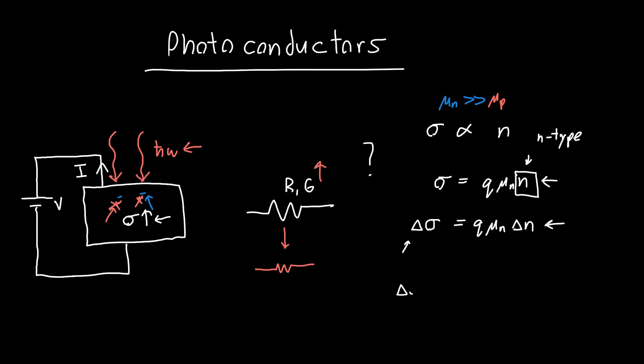For a given conductivity change delta sigma, what we're actually measuring is a change in the observed current flowing through this conductor. So our circuit electrically looks something like this.